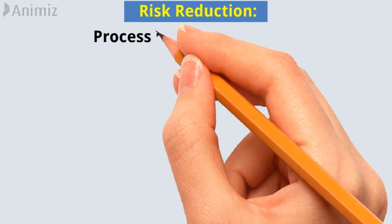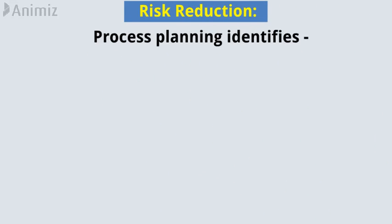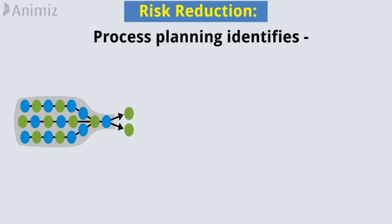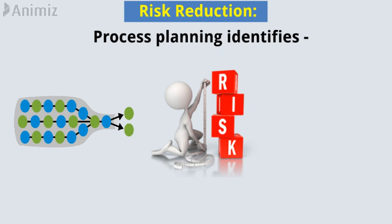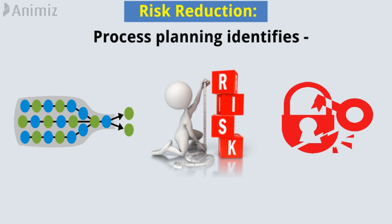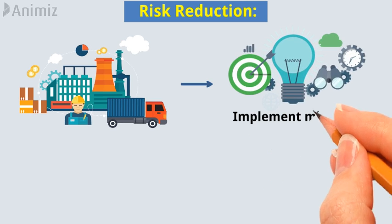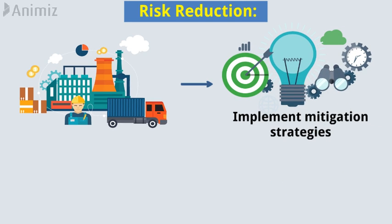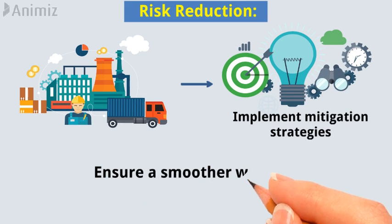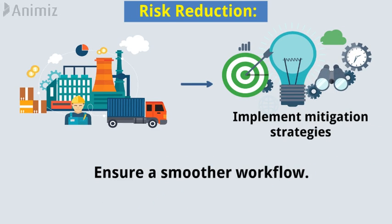Risk Reduction: Process planning identifies potential bottlenecks, risks, and vulnerabilities in the production process. This allows manufacturers to implement mitigation strategies and ensure a smoother workflow.